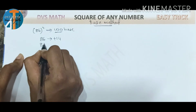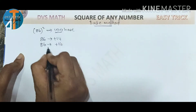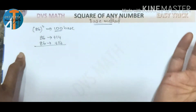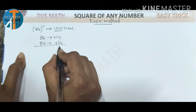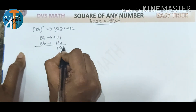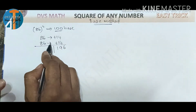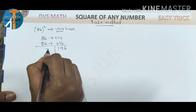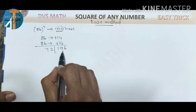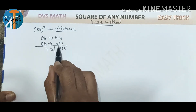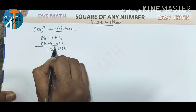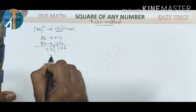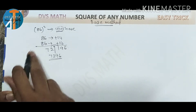Since 86 is below 100, we have a minus function. Now 14 squared is 196. So 86 minus 14 gives 72. The base is 100 — we have two digits, so 196 has 3 digits. We take the last two digits of 196 which is 96, and add 1 to 72: 72 plus 1 is 73. So the answer is 7396. That is 86 squared to base 100.